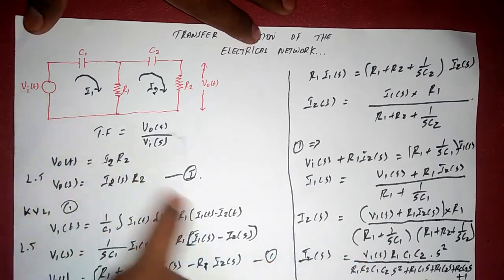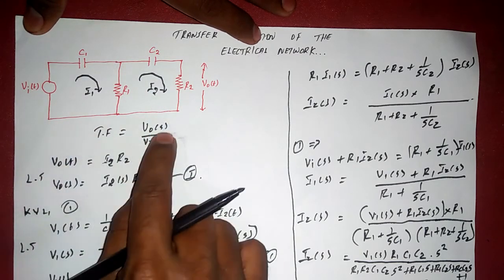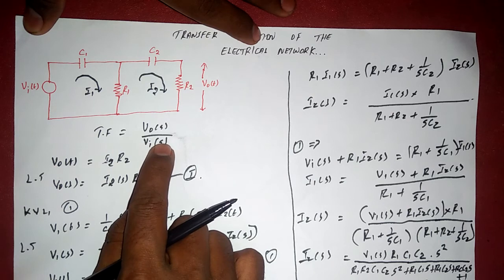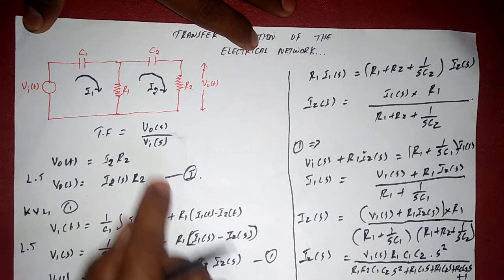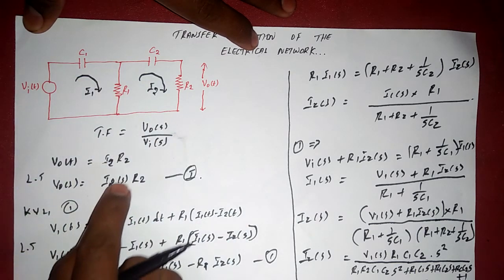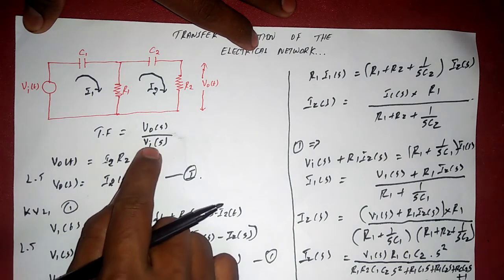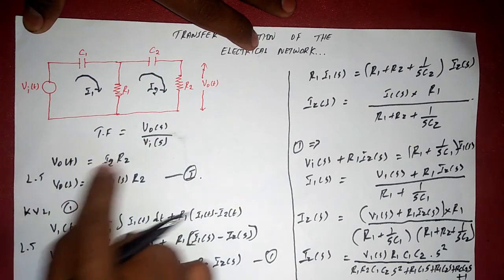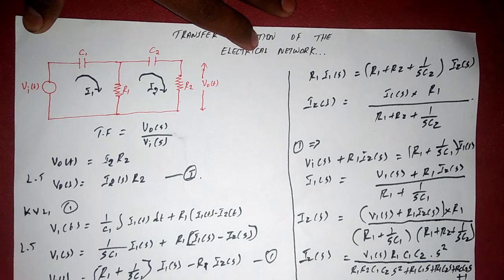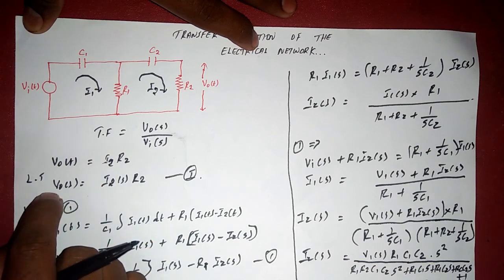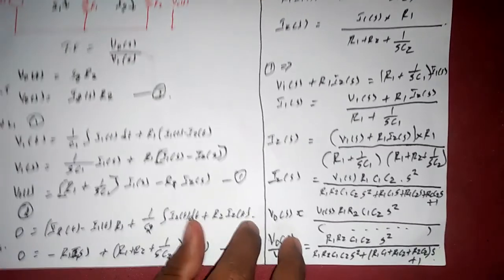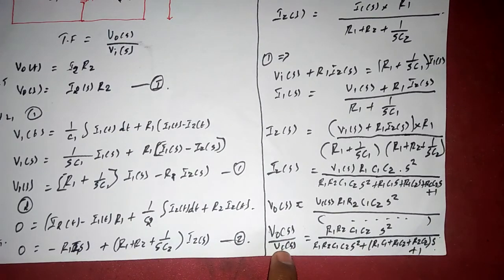To summarize: we found the transfer function for the electrical network as V0(s)/Vi(s) in Laplace transform format. First we wrote the output equation, then the mesh equations. We found I2(s) in terms of Vi(s) by eliminating I1(s) through substitution, then substituted I2(s) back to get V0(s) in terms of Vi(s), giving us the final transfer function.